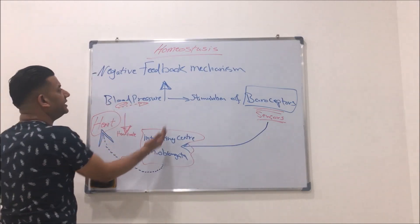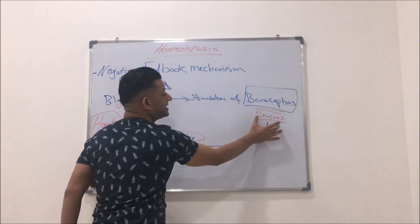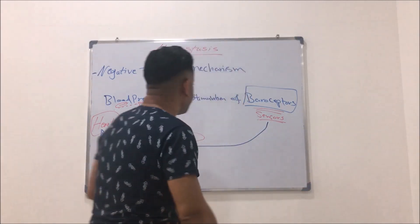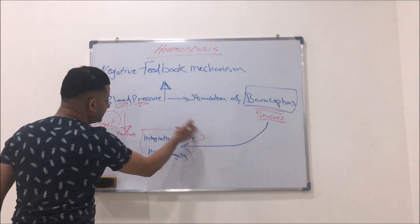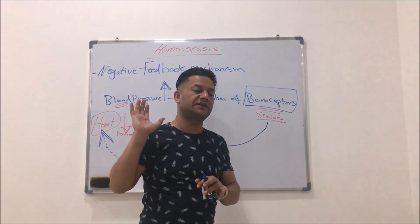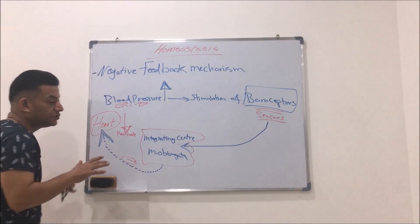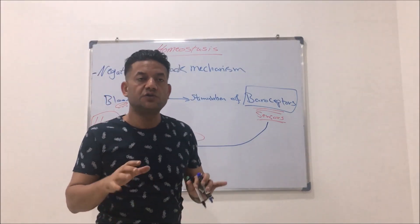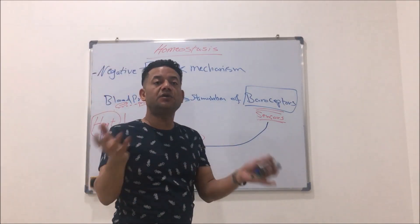Let's recall again: when blood pressure increases, this will cause stimulation of baroreceptors or sensors in large arteries like the carotid artery and aorta. The sensors will send signals to the integrating center — the cardiac center in the medulla oblongata — which will send inhibitory signals to the heart to cause a decrease in heart rate, so blood pressure will also decrease. And vice versa is also true.